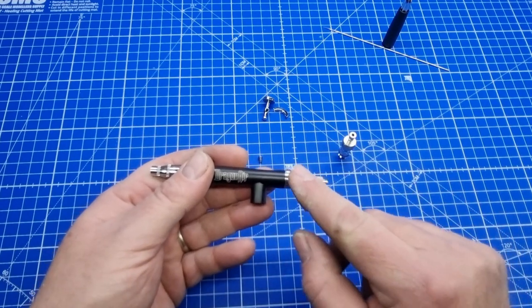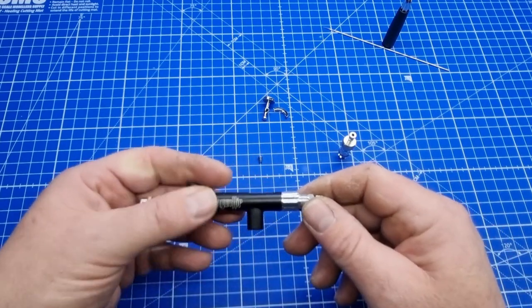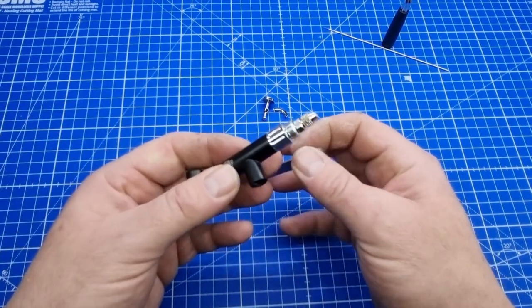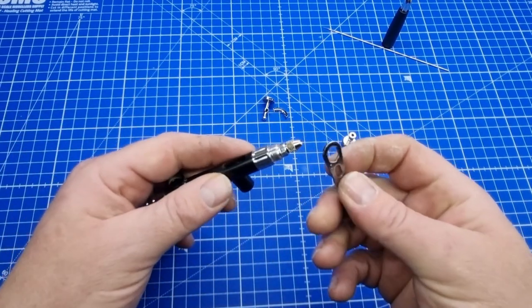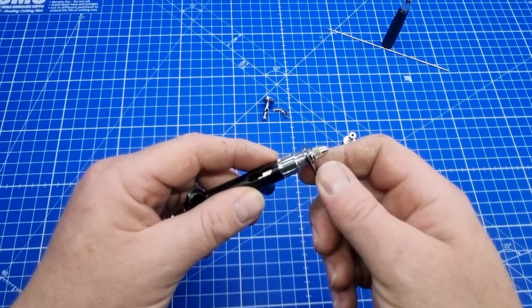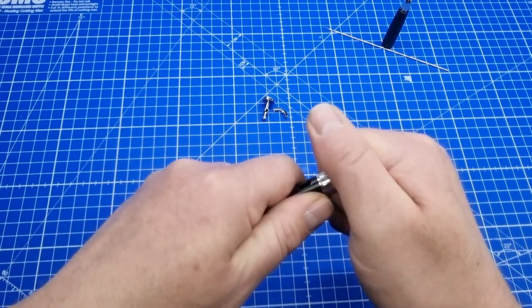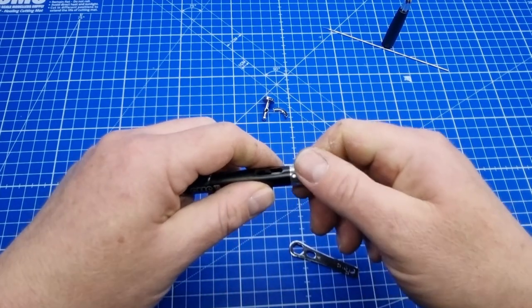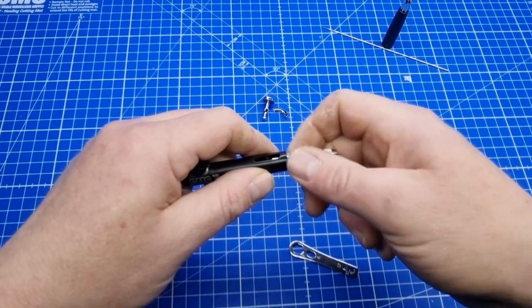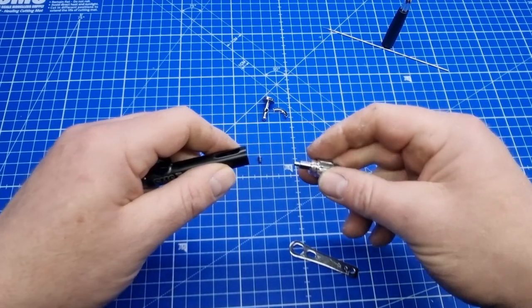From there, we can now pull out this back section here using our spanner tool. We'll get the big section at the end here, just slip that over the end, and just pop it off. Hit it and crack it enough to crack the thread, and then just pull it out by hand.